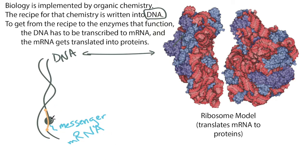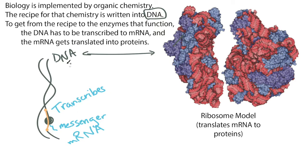We call this part transcription — the enzyme transcribes the DNA, creating this messenger RNA. Both DNA and RNA are composed of nucleic acids that code for specific things. The DNA is a very stable version, and the messenger RNA is a reactive version.